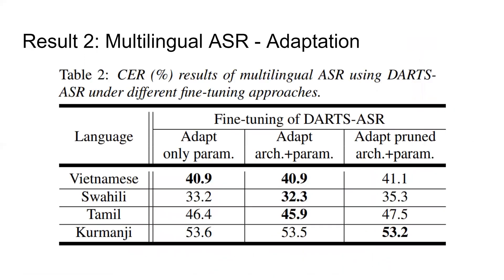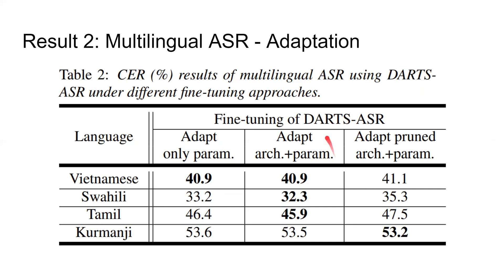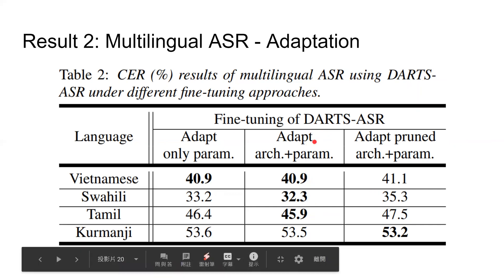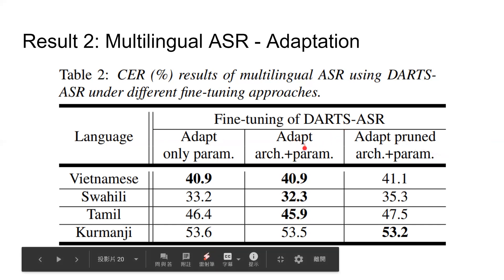So we present the ASR results under the multilingual setting. The model is first pre-trained on three source languages and adapted on the same four different target languages. We first compare three adaptation approaches. From this table, we can observe that adapting both architecture and parameter weights obtains the best performance on every CER. However, the other two adaptation approaches are only a little worse. In this case, after pre-training, DARTS-ASR can find a generally good architecture and parameter weights for different languages. And the pruned architecture can reduce computational cost while suffering little performance drop. We then use the fine-tuning approach that adapts both architecture and parameter weights for DARTS-ASR in the following experiments.